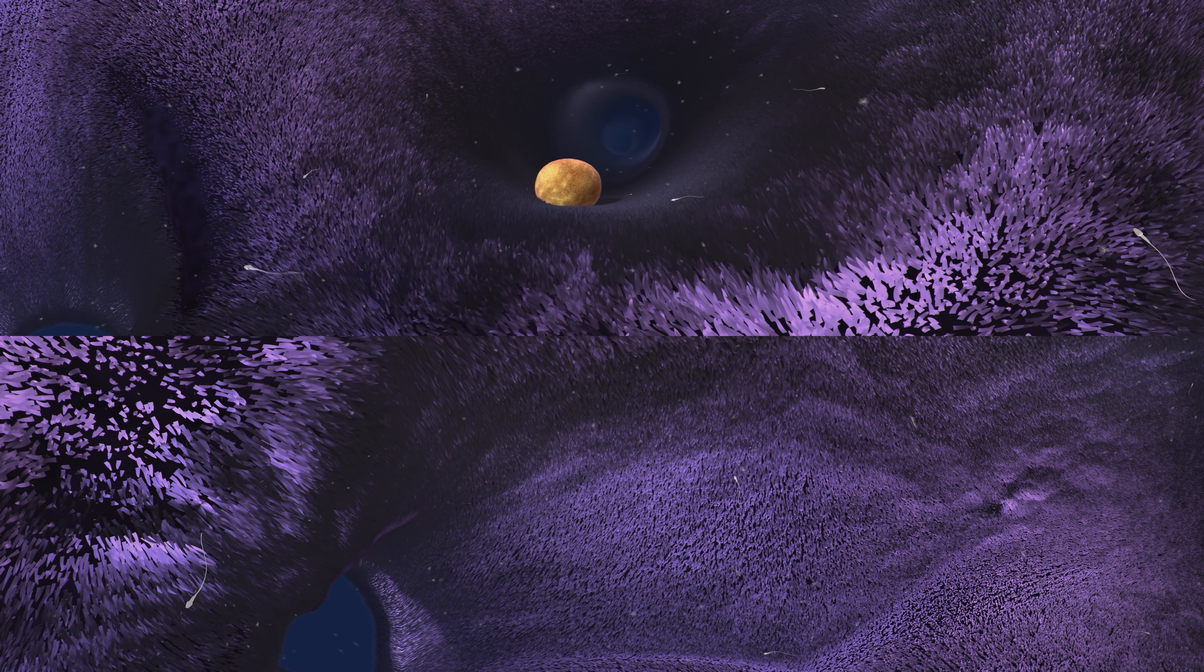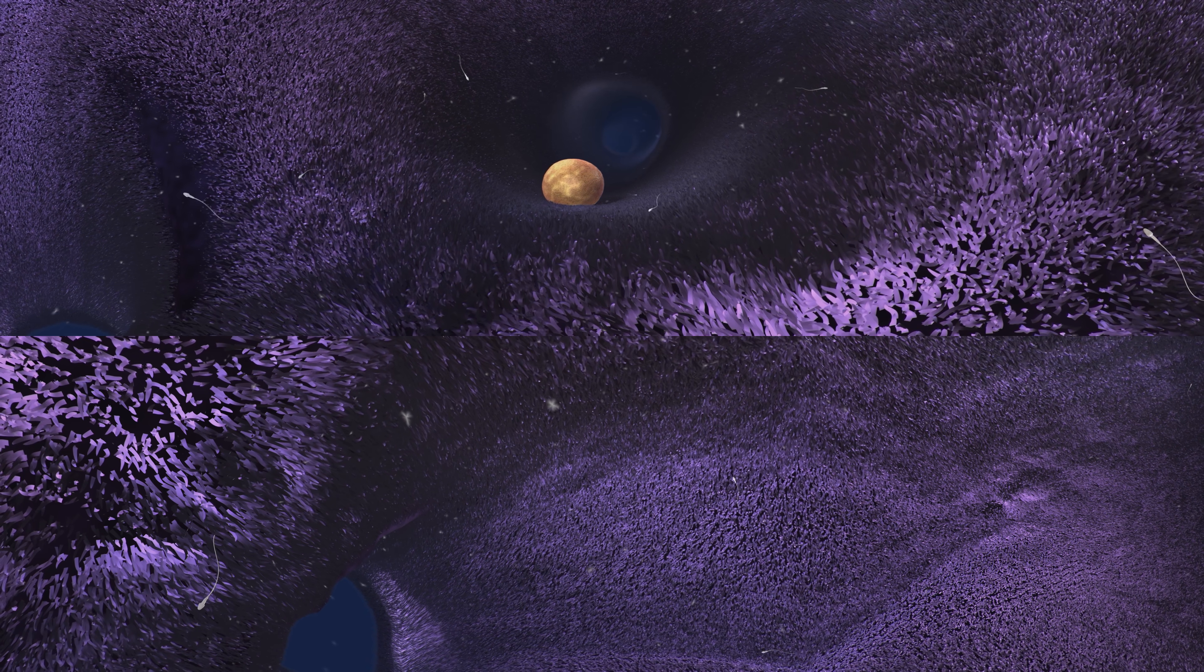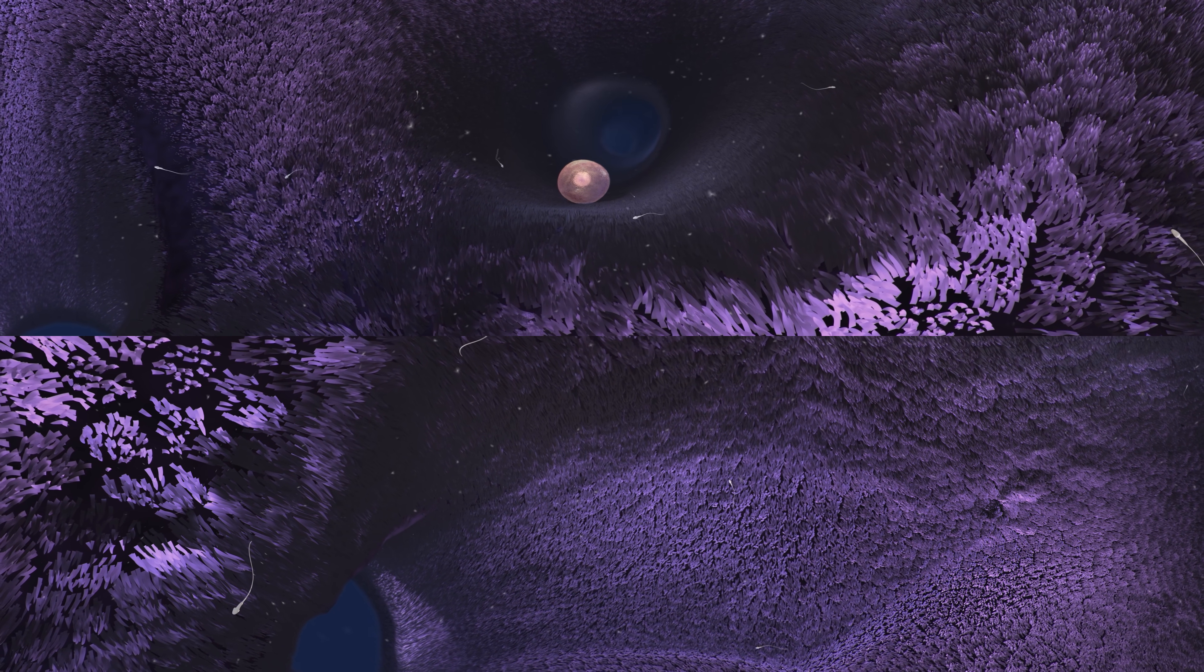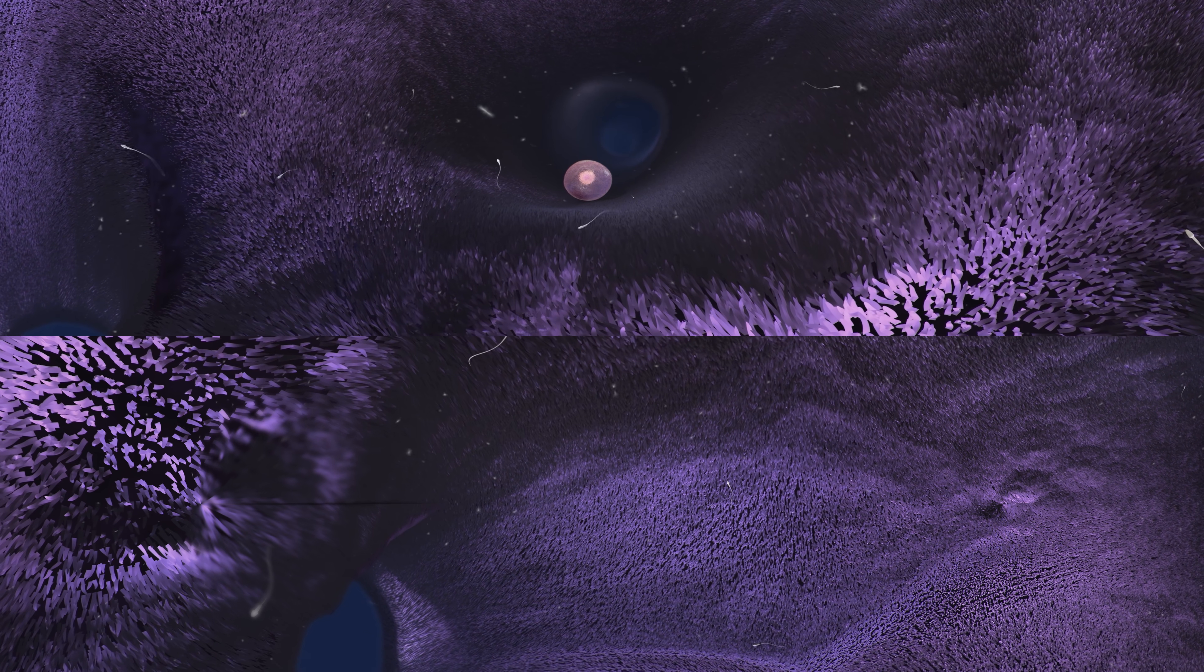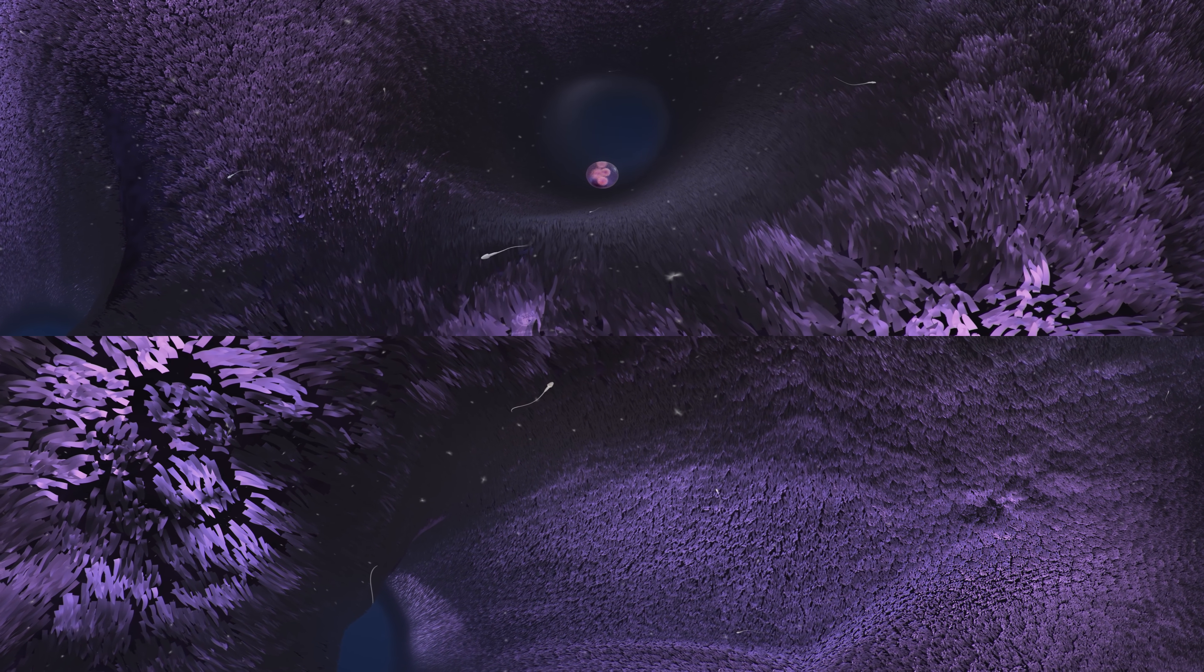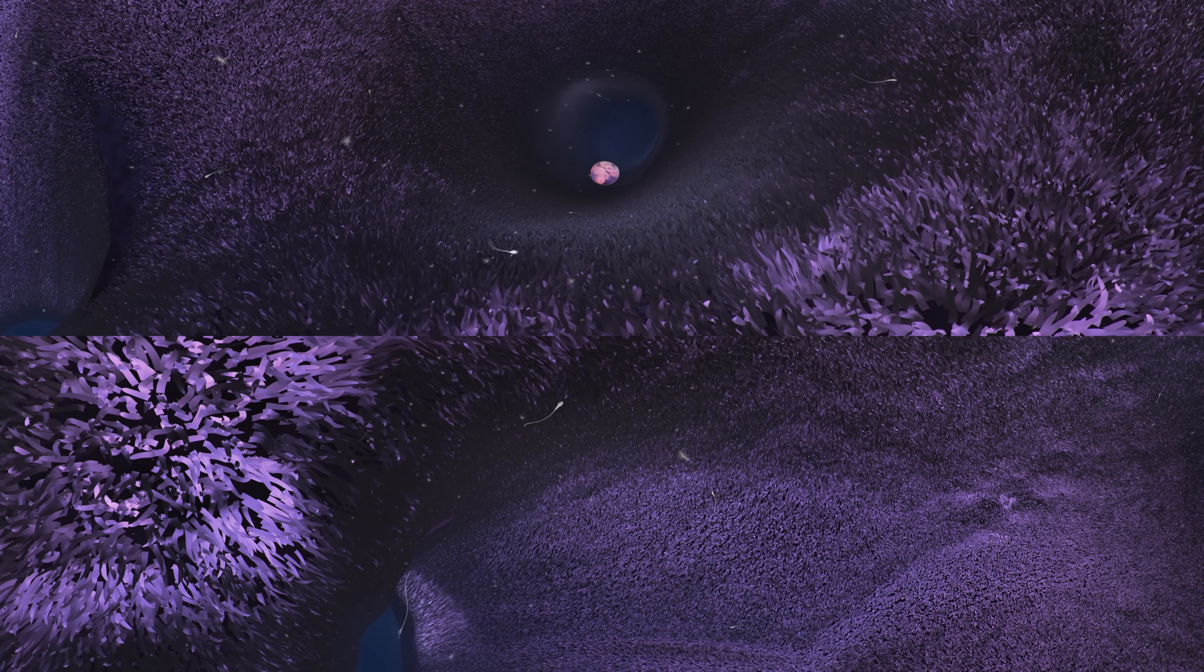The zygote is the first cell of the developing embryo. It carries all the genetic instructions necessary to form a new individual. The zygote begins a rapid process of cell division. It divides into two cells, then four, then eight, forming a small, growing ball of cells.